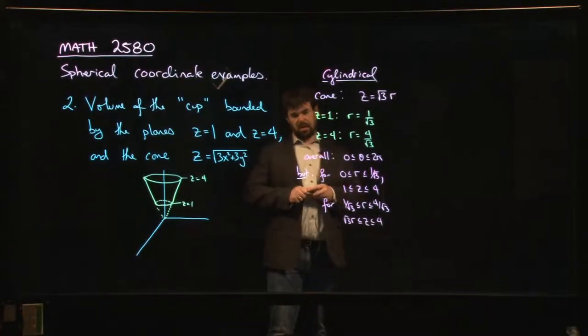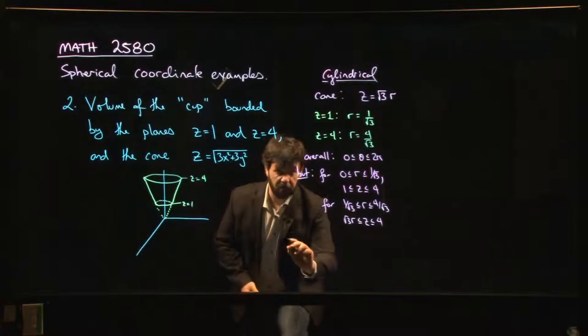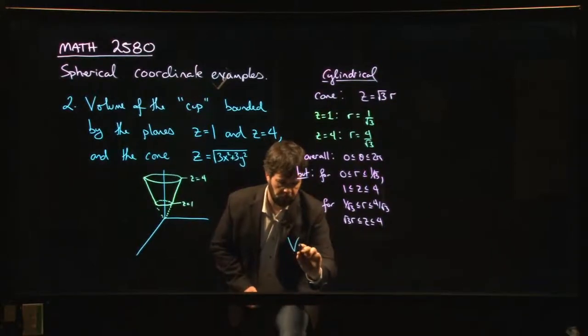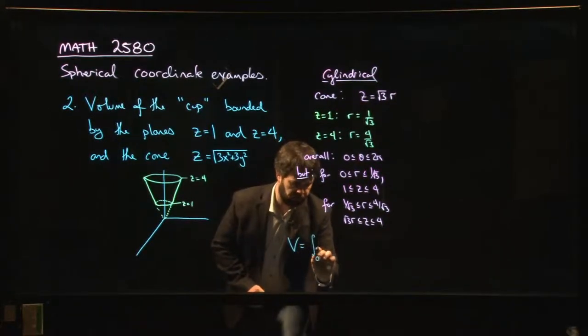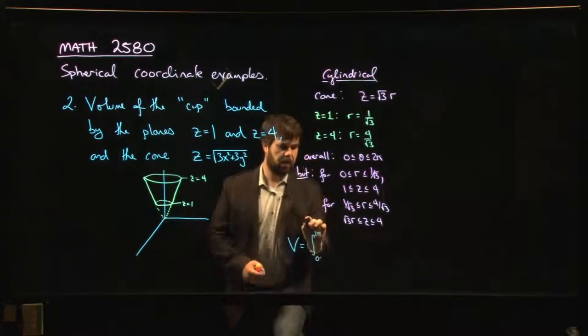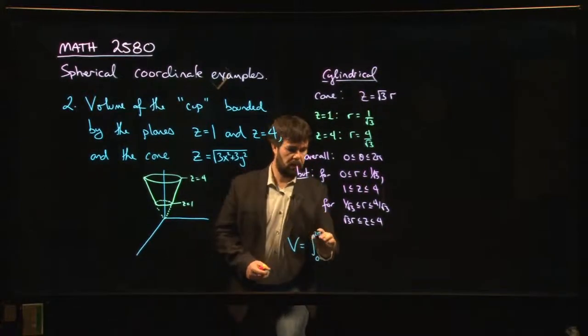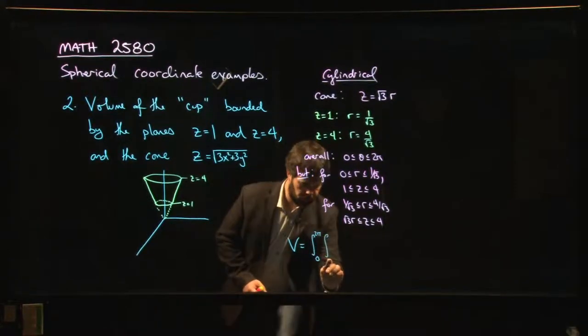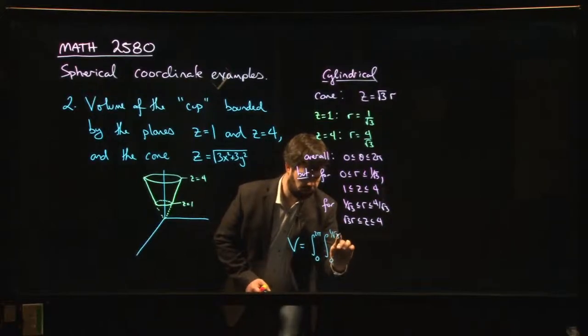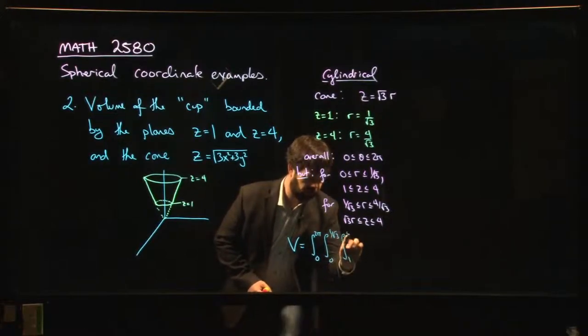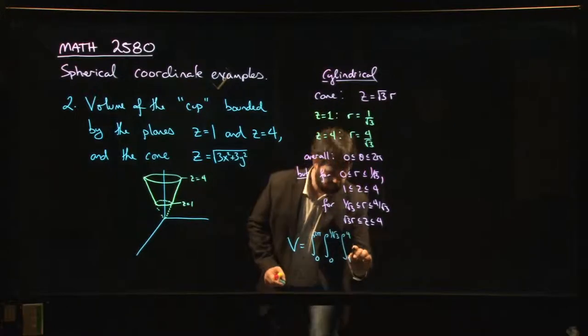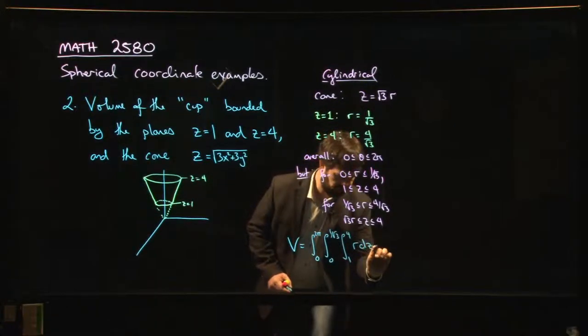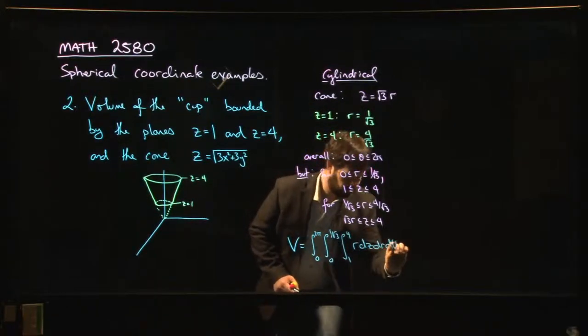So it's not that bad, but certainly you need two integrals, right? So in cylindrical coordinates, the volume is going to look like this. The volume is going to be the integral from zero to two pi, and then the integral from zero to one over root three, and the integral from one to four of r dz dr d theta.